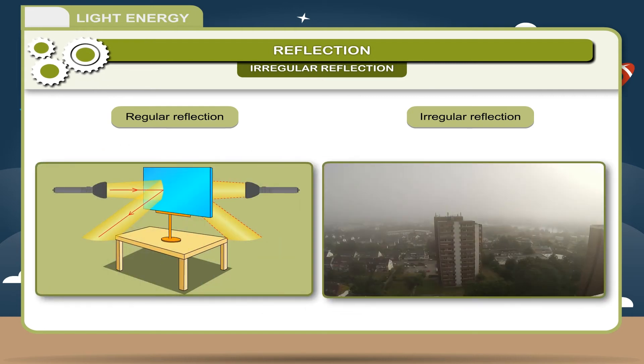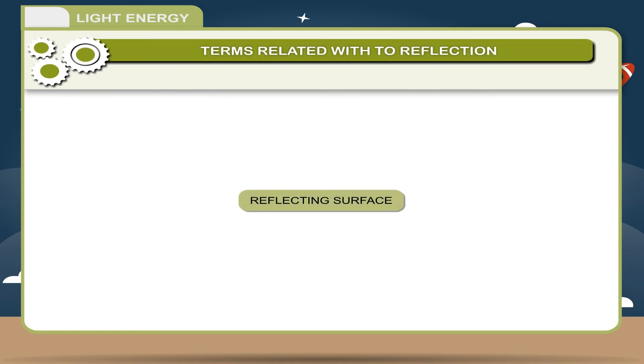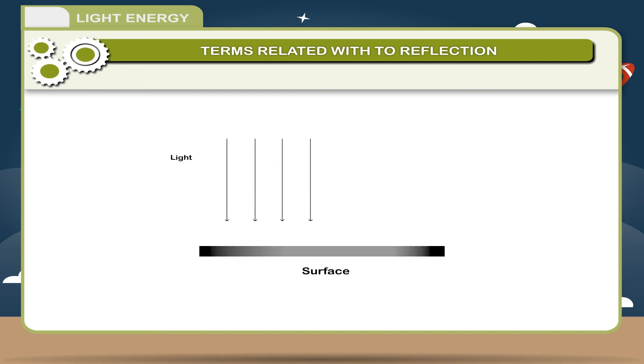Terms related to reflection. Reflecting surface: any surface which can send back the rays of light falling on it into the same medium is called a reflecting surface. Example: in the figure XY is the reflecting surface.